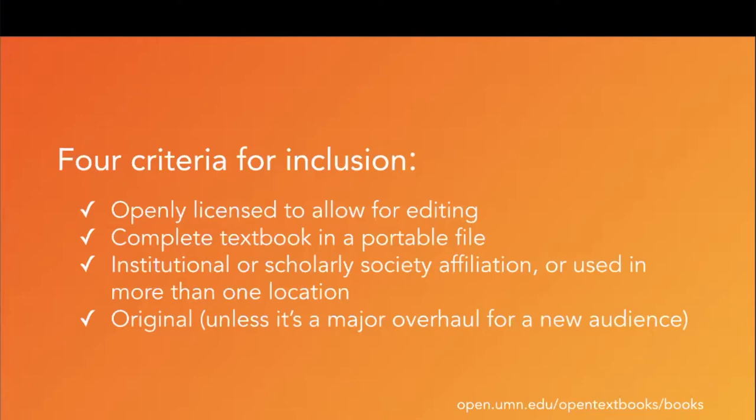The third criteria is some kind of institutional or scholarly society affiliation, or the book needs to be used in more than one location. So if an independent author working on their own decides to write and publish an open textbook, we would look to see if that book is also used by someone else in the discipline on another campus. That is what that third criteria is trying to get at.